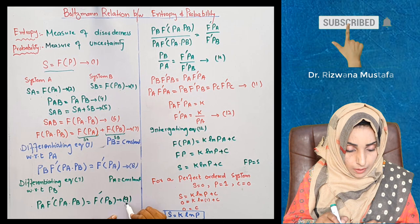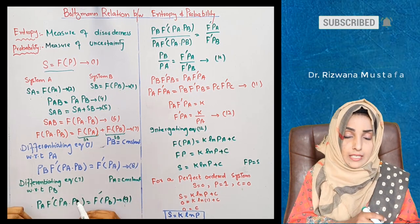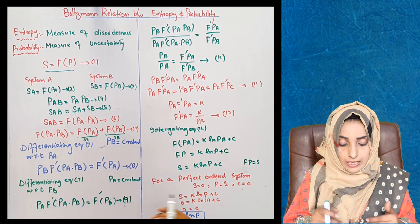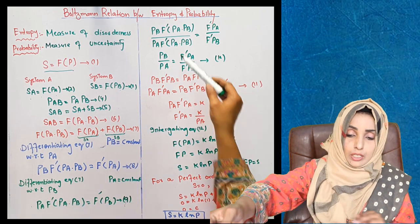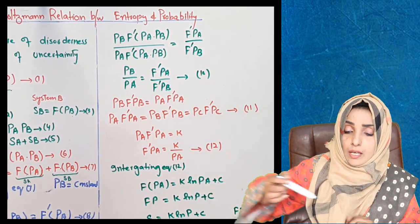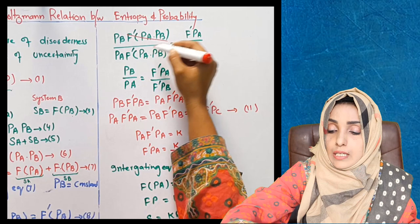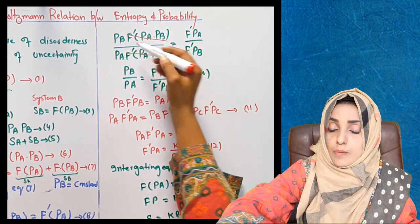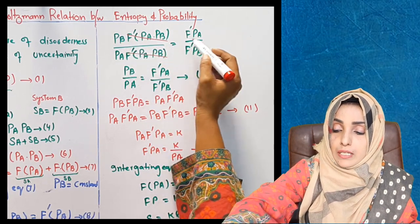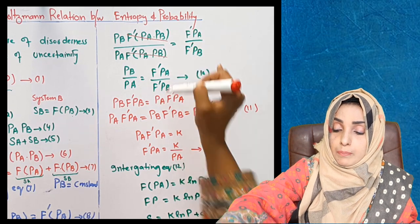When we divide equation number 8 and equation number 9 with each other, the left hand side will divide with left hand side, right hand side with right hand side. In both equations, this term can cancel out. So P(B) divided by P(A) is equal to F prime P(A) divided by F prime P(B).